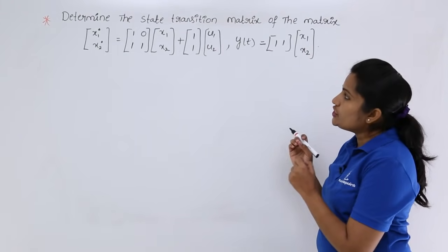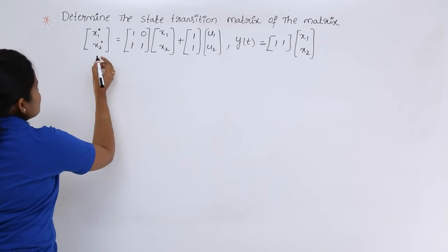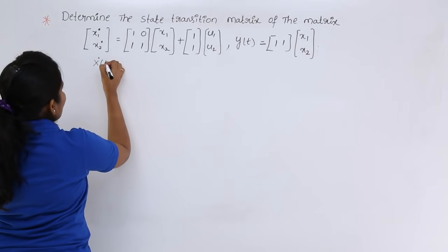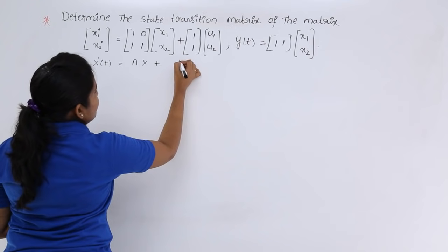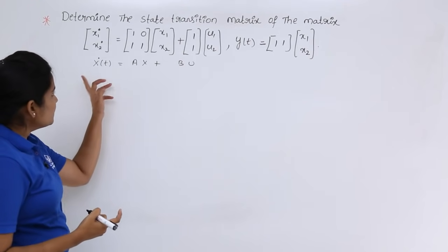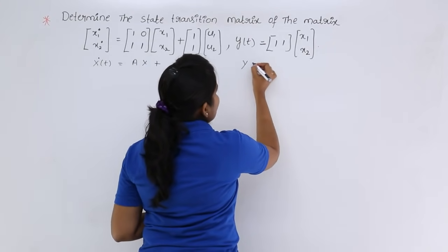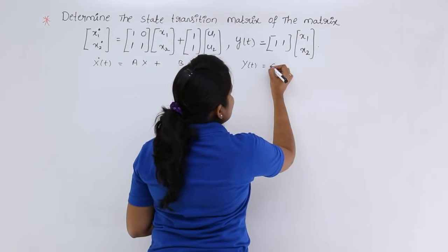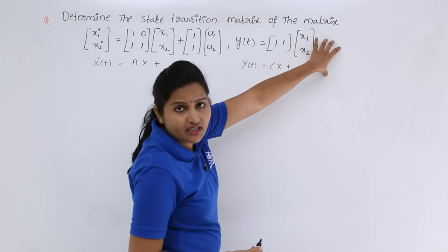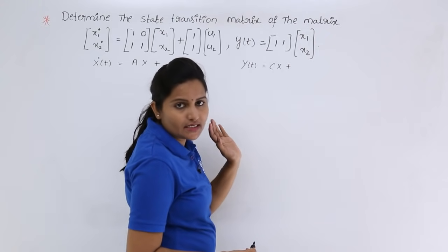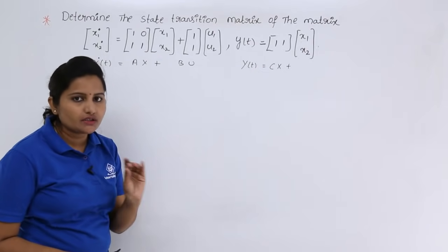For this state model, we need to find the state transition matrix. For reference: x-dot(t) = A·x + B·u is the state equation, and y(t) = C·x + D·u is the output equation. In the given equation, D·u(t) is equal to zero, so the D term is absent.